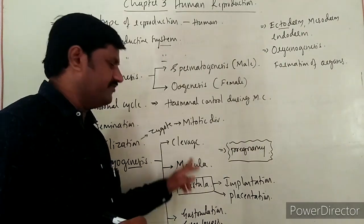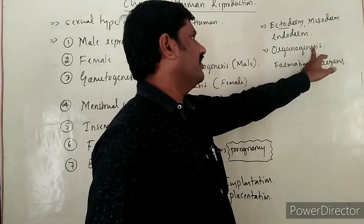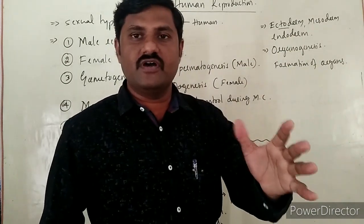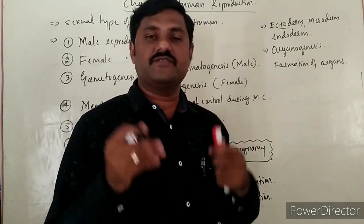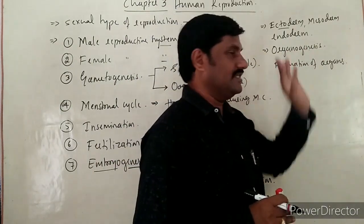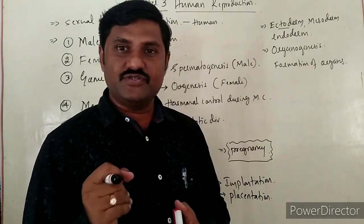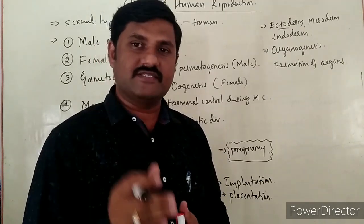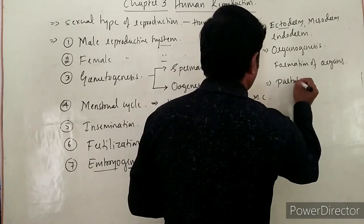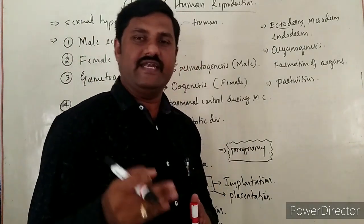All the developmental stages from blastocyst implantation up to the formation of organs in the baby constitute prenatal development. When the baby is fully formed and ready to come out of the womb of the mother, the process of ejection of the baby from the womb is called Parturition — that is, delivery of the baby.